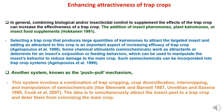Selecting a trap crop that produces large quantities of pheromones to attract the targeted insect and adding an attractant to this crop is an important aspect of increasing efficacy. Some chemical stimulants like semi-chemicals work as attractants or deterrents for an insect's oviposition or feeding behaviors, which can be used to manipulate the insect's behavior to reduce damage to the main crop.